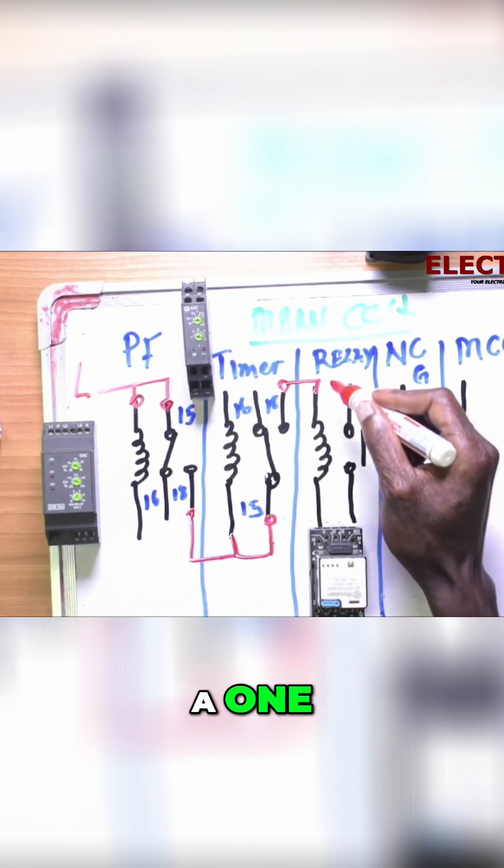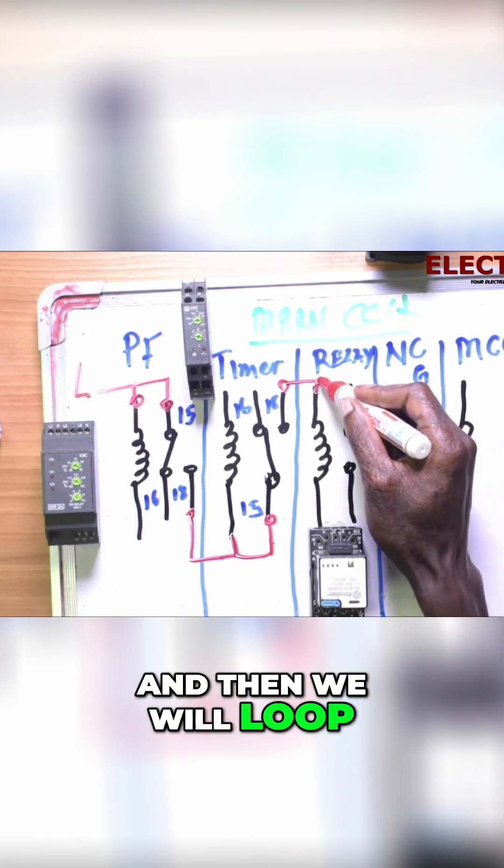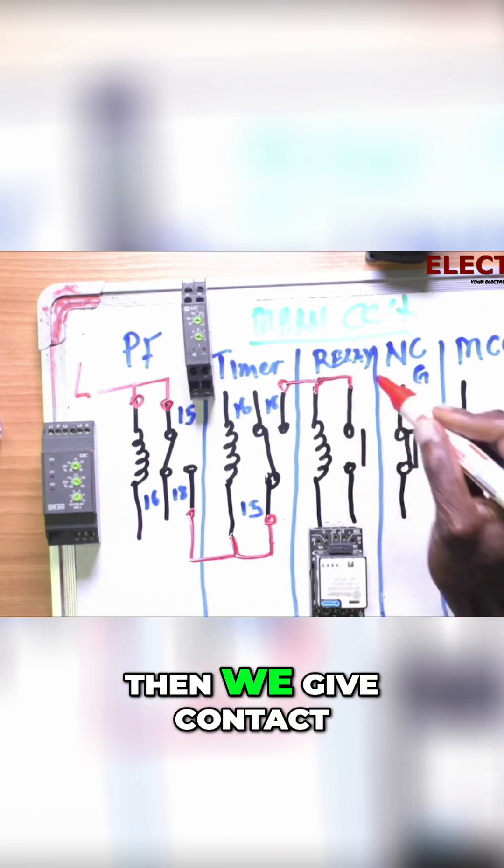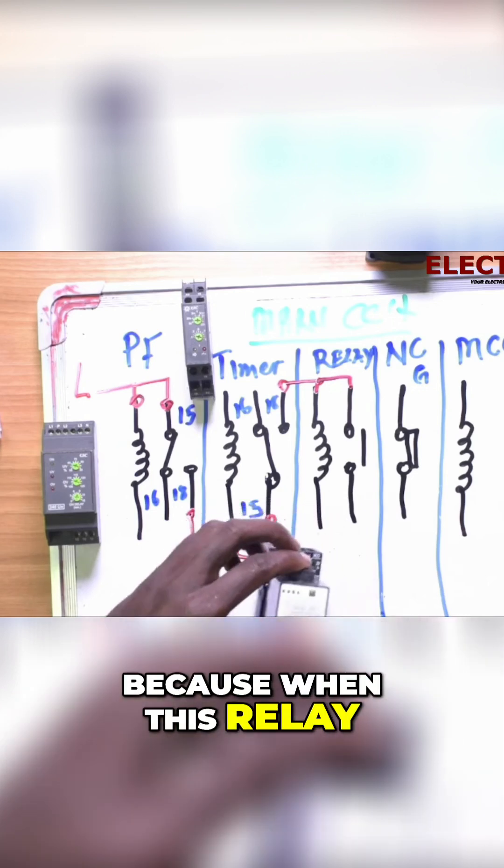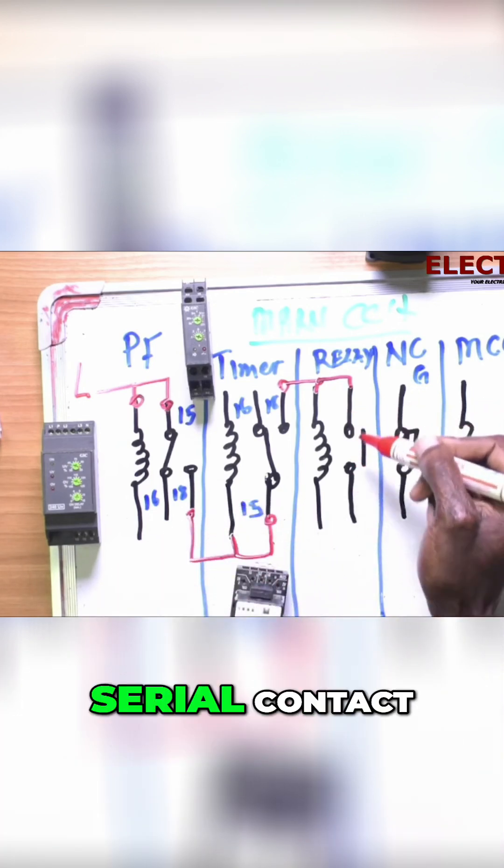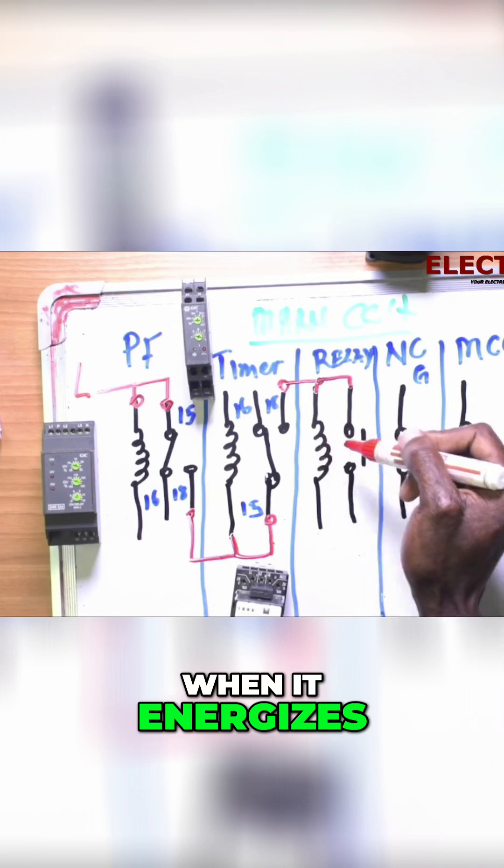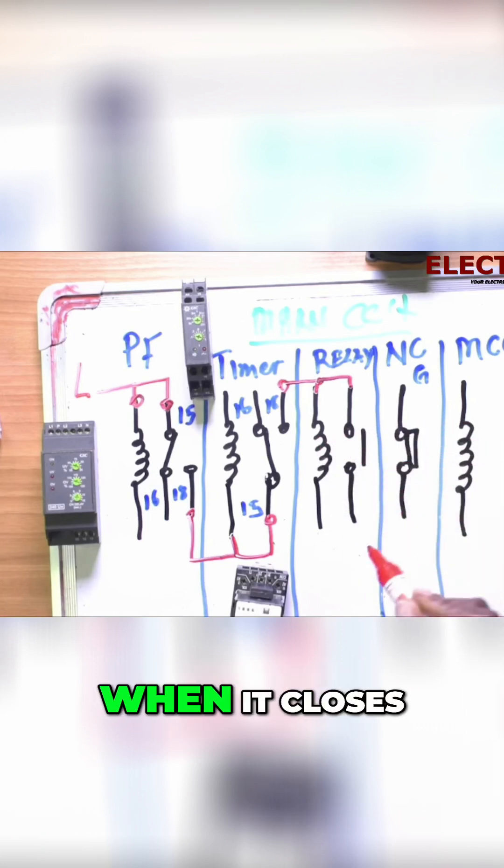At A1, we will loop here. Then we give contact normally open to the relay, because when this relay energizes, this contact closes.